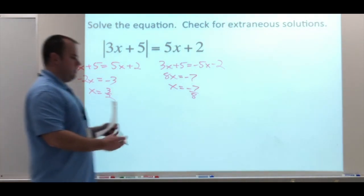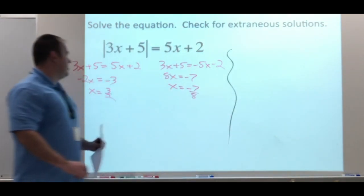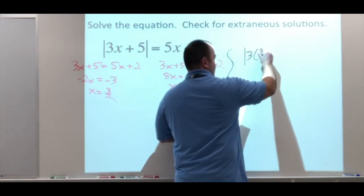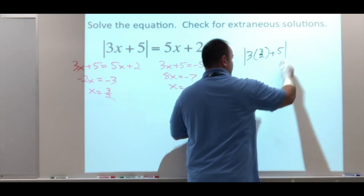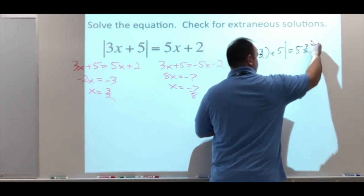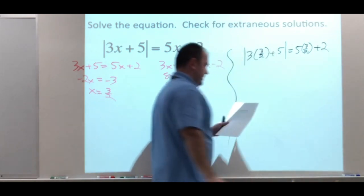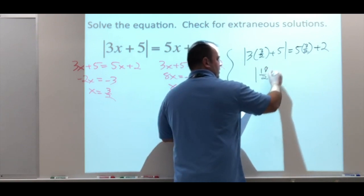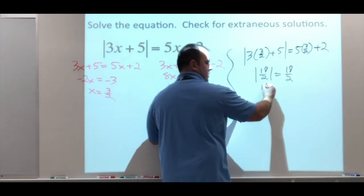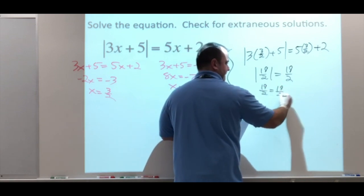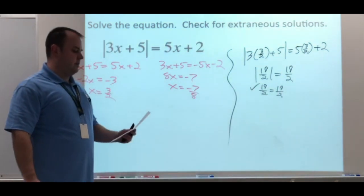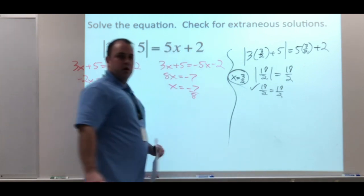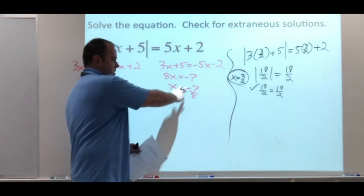So going through the work now, let's plug these back in. Doing my 3 halves first. So what we end up doing, getting all that work, we should get absolute value of 19 over 2 equals 19 over 2. That's a true statement. So x equals 3 over 2, that one works. We're good with that one.